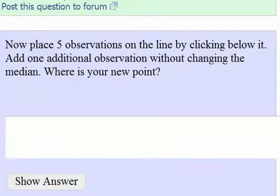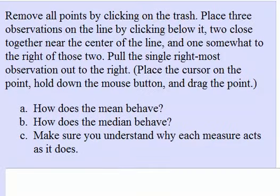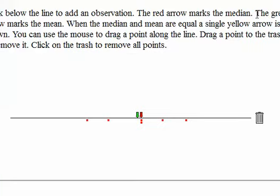So here in the first problem we are asked to remove all the points by clicking the trash and then place three observations on the line by clicking below. Choose two close together near the center of the line and one somewhat to the right of the other two. Pull the single rightmost observation out to the right. So we clear everything. We put two points close together and then one point further apart. And we see that the median doesn't change at all, but the mean does change and is increasing as we pull the observation to the right.